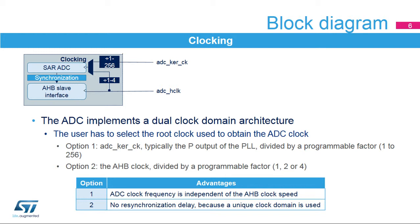The ADC has two clock inputs: ADC CURCK and ADC Hclock. The AHB interface belongs to the ADC Hclock clock domain. For the digital part of the SAR ADC, there are two options: either using ADC Hclock as the reference clock, or using ADC CURCK which is dedicated and independent of ADC Hclock. With this second option, dynamic frequency scaling can be implemented in the AHB and CPU clock domain while the sampling clock is fixed.